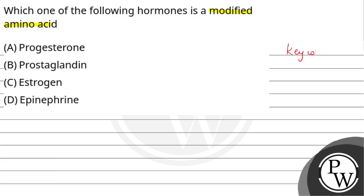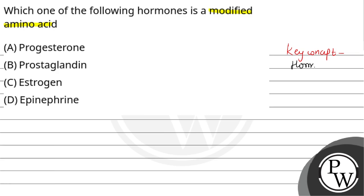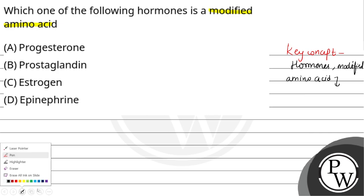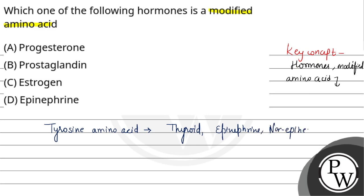So firstly, let's see the key concept of this question. Here we are going to see about the hormones modified by amino acids. There are some hormones which are derived from amino acids. Some hormones are derived from tyrosine, which is an aromatic amino acid — like thyroid hormone, epinephrine hormone, and norepinephrine hormone. These are all derived from the tyrosine amino acid.